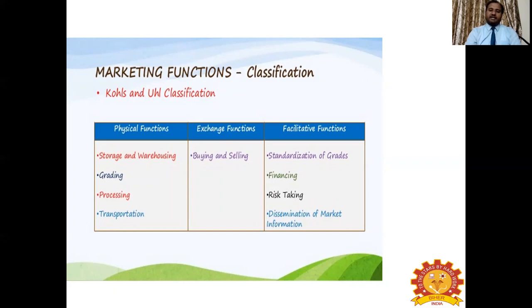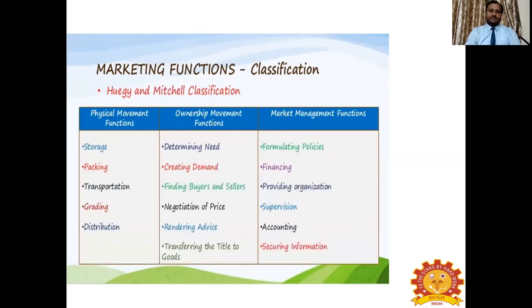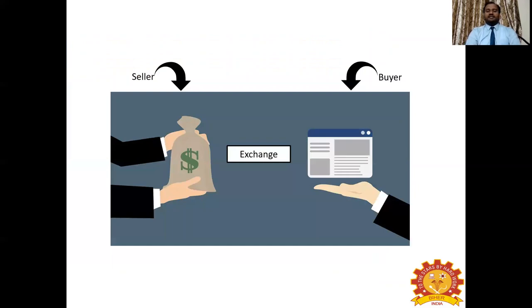We will take the exchange function — that is, buying and selling — from this particular classification. We'll be discussing this particular marketing function in this lecture, as each topic like storage, warehousing, grading, and processing is a separate lecture. Another classification was given by Huggy and Mitchell, divided into three types: physical movement functions, ownership movement functions, and market management functions. Buying and selling combined can be called exchange functions.